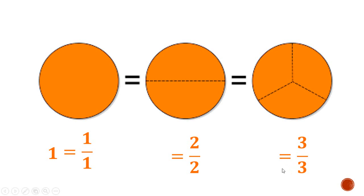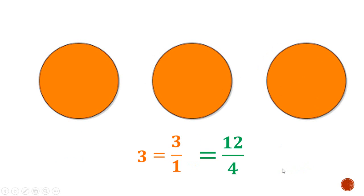Now consider the whole number 3. We have 3 circles, and each circle is not divided into any parts — it's the same as saying each circle has only 1 part, so the denominator is 1. How many of these 1 parts do we have? We have 3 of them. So the fraction to represent 3 is 3 over 1.